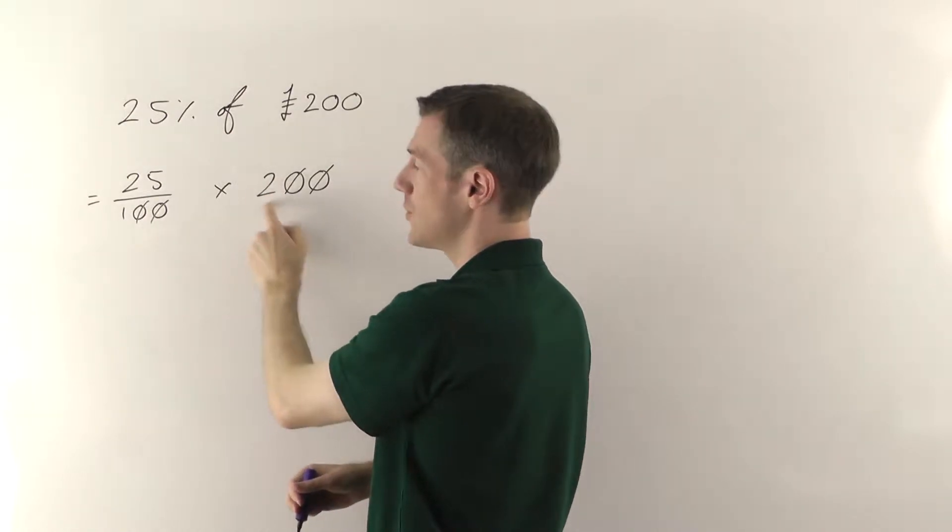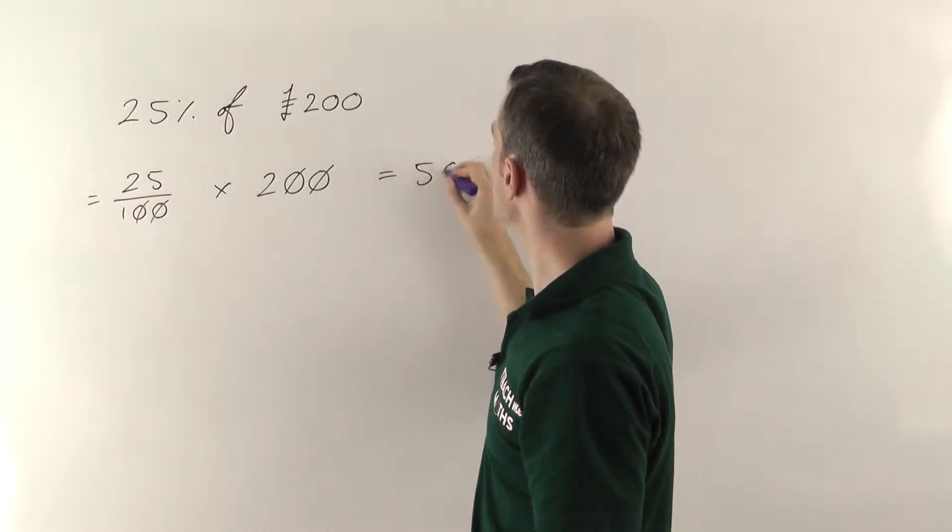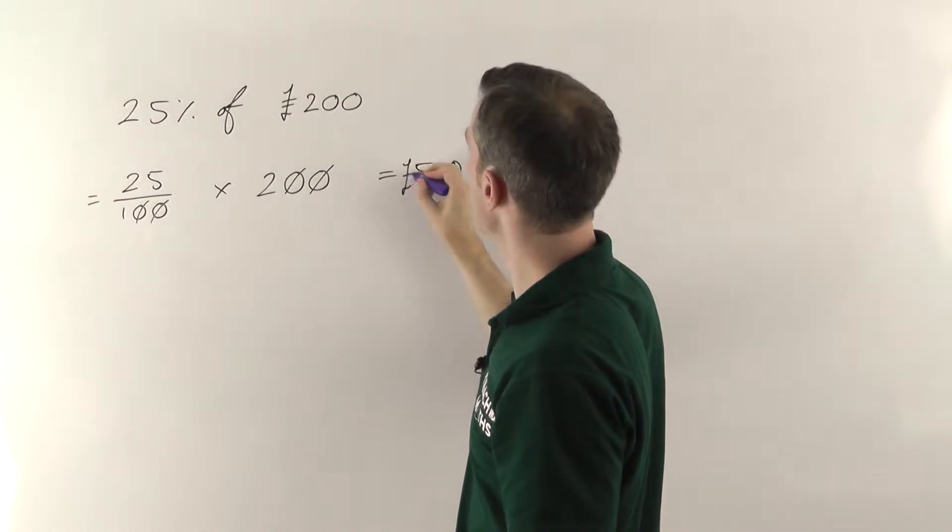So 200 divided by 100 just gives you 2, times that by the 25. 2 lots of 25 gives you 50. So 25% of 200 pounds would be 50 pounds.